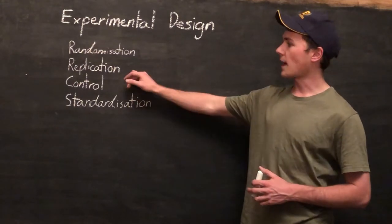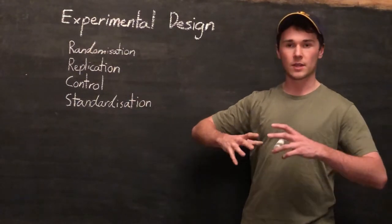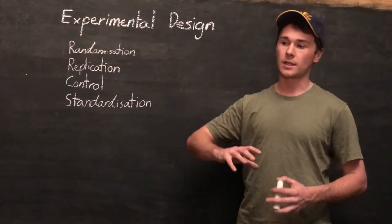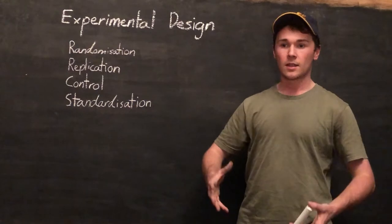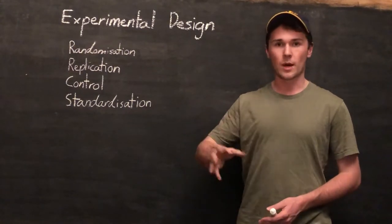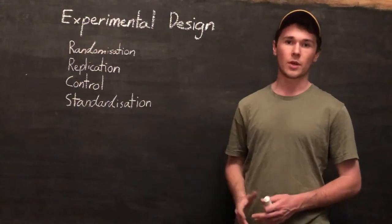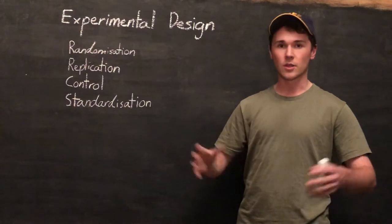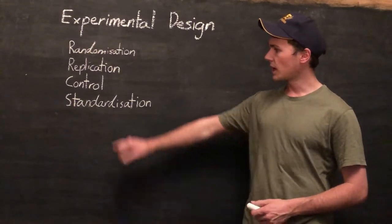Next we've got replication. Replication is having the experiment or the trials repeated multiple times. That way we can get multiple data points. Rather than just saying we're going to run the experiment once and we're going to get one result, we're going to run it ten times and get ten results and compare all those results and make an average.